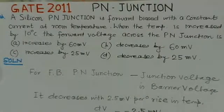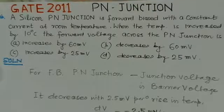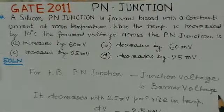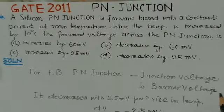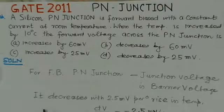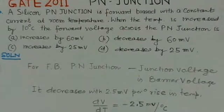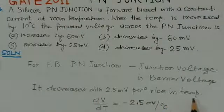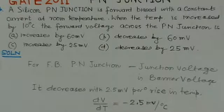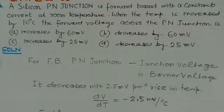For a forward biased junction, the junction voltage is essentially the barrier voltage. This barrier voltage does not much depend upon the forward bias — it remains the same for most forward bias values. However, it does depend upon temperature. The temperature dependence of this voltage is a decrease of 2.5 millivolts per degree rise in temperature. So dV/dT = -2.5 mV/°C.